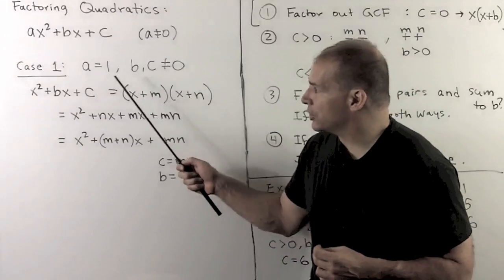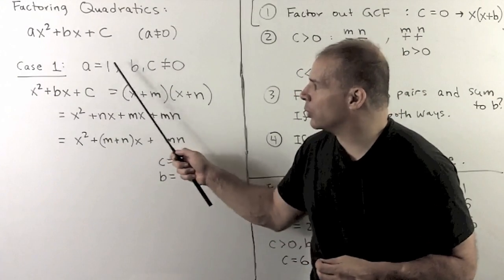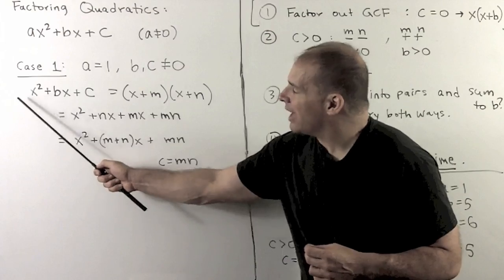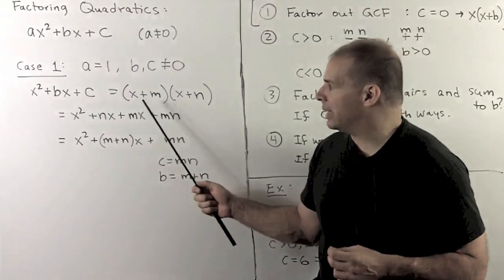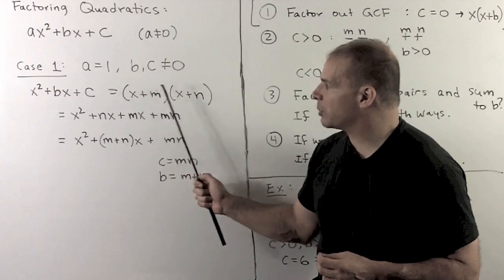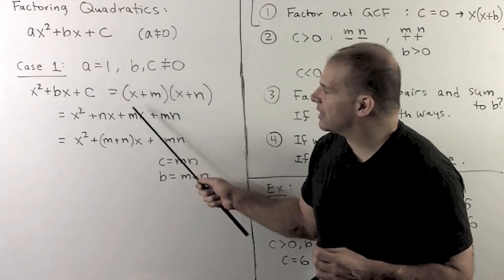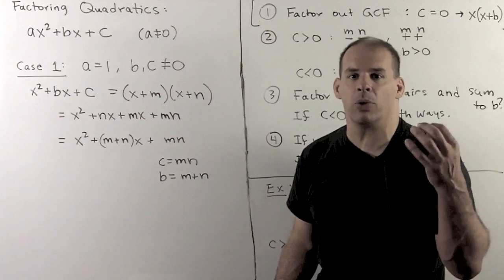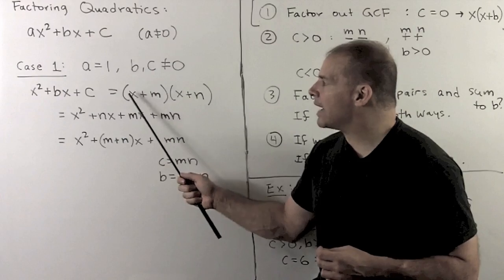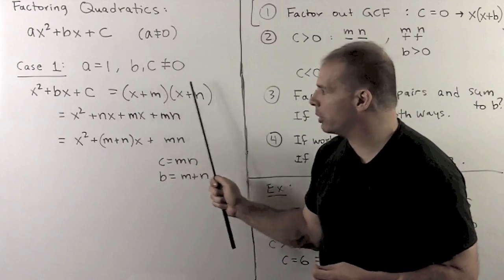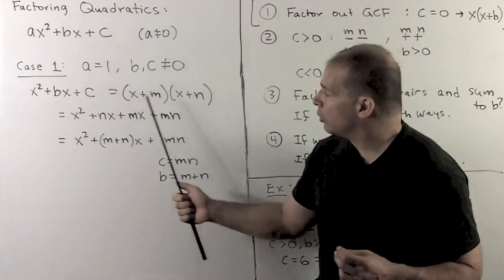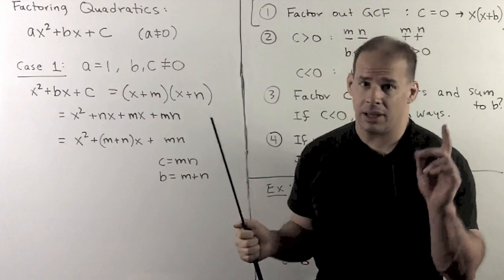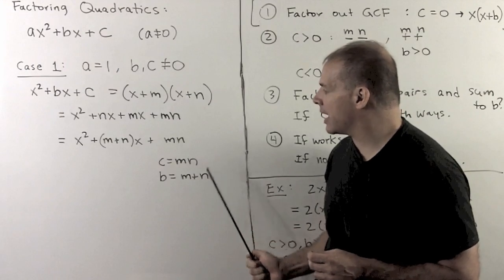For our first technique — this is really a special case, it's a warm-up — I'll have a equal to 1, b and c non-zero. So we're looking at a quadratic of the form x squared plus bx plus c. If I could factor this into polynomials of lower degree, they have just x's in them, so they're linear: x plus m, x plus n. Because we're insisting on integers, we FOIL and match up powers of x. We see that if a factorization like this exists, we must have c equals m times n and b equals m plus n.